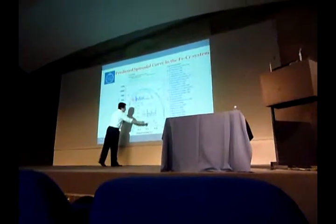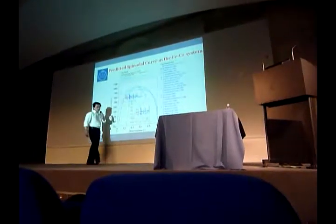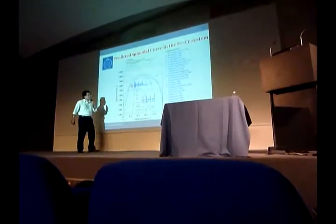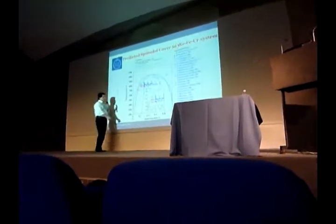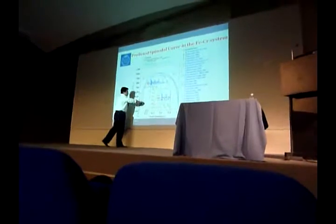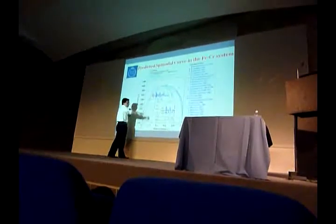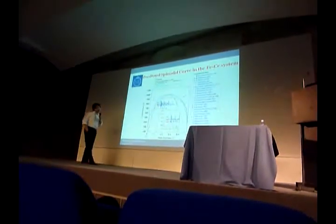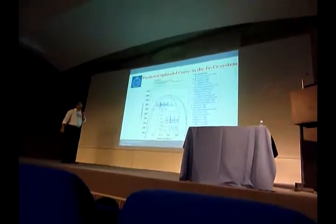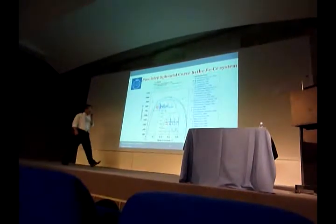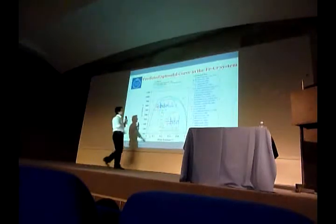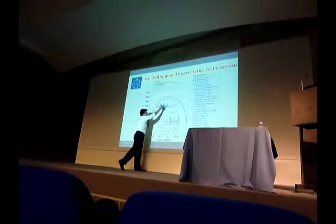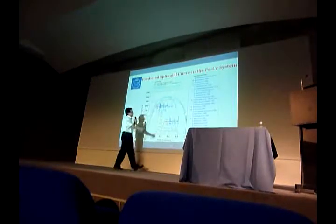For the last line, we have a spinal curve here, and for the very small dot line, it's our old description. We make magnification for this area.